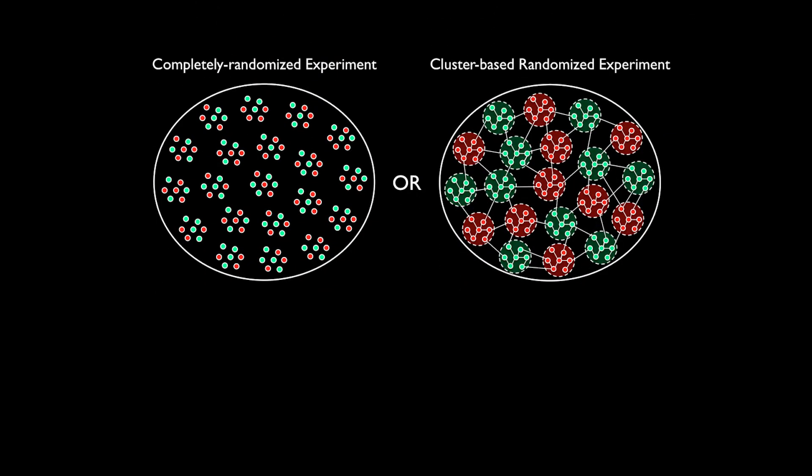Running a cluster-based randomized experiment comes at a cost. Since our unit of analysis is a cluster of users rather than an individual user, the variance of our estimator significantly increases, which in turn reduces our ability to detect network effects. Therefore, knowing whether there are network effects in our experiments can help us decide whether we need to pay the additional cost of running a cluster-based randomized experiment.